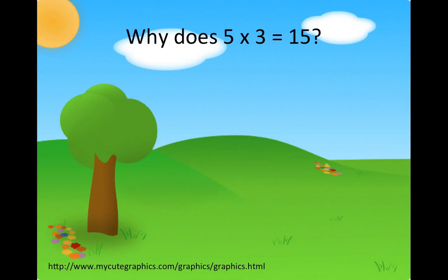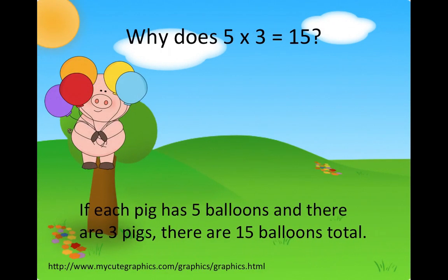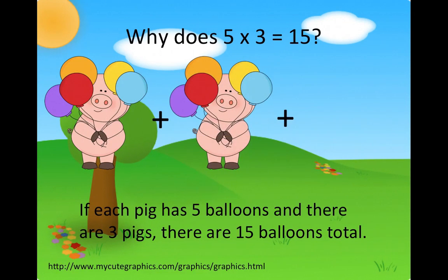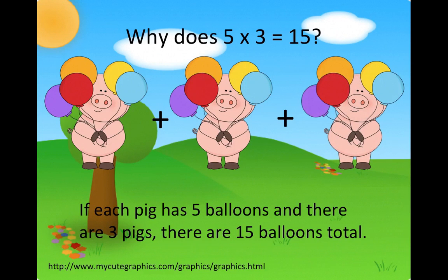Why does 5 times 3 equal 15? If each pig has 5 balloons and there are 3 pigs, there are 15 balloons total. You have 5 groups of balloons and 3 pigs, making 15 balloons total.